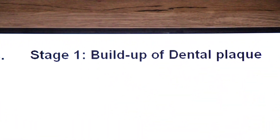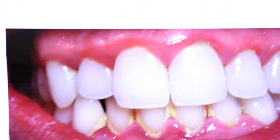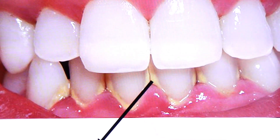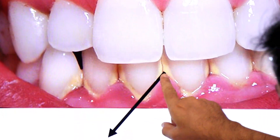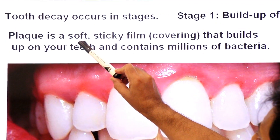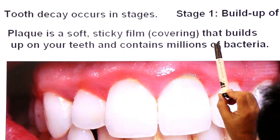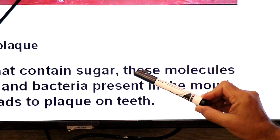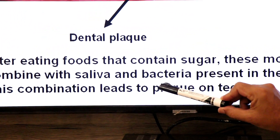Now stage one of dental caries: build-up of plaque, also called dental plaque. Dear students, this picture dekho. Gums ke upar ya teeth ke beech mein aapko ek yellow cover ki biofilm ya covering nazar aa rahi hai. This biofilm contains millions of bacteria, and this covering is called dental plaque. This biofilm or covering around your teeth is known as dental plaque. Plaque is a soft, sticky film that builds up on your teeth and contains millions of bacteria. After eating foods that contain sugars, these molecules combine with saliva and bacteria present in the mouth, and this combination leads to plaque on your teeth.